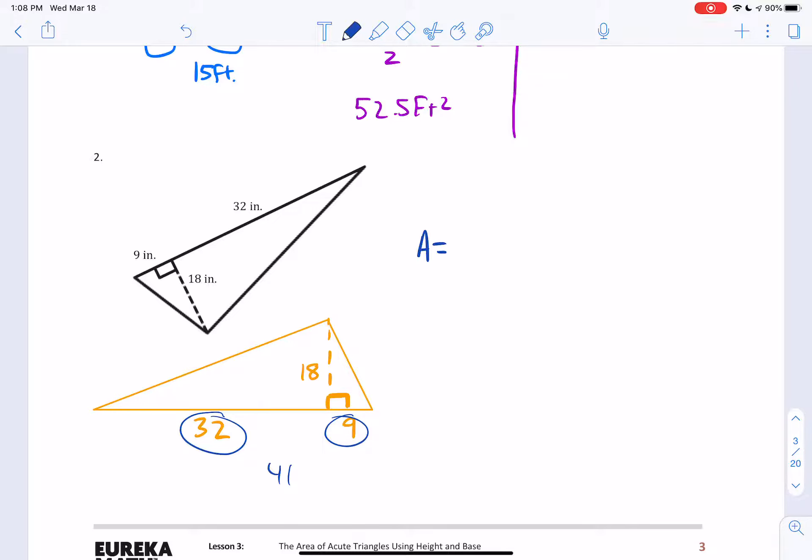Area equals base times height. My base is 30. Oh, it's not 32. The base is 41. I added them together. The height is 18. And then I'm going to divide by 2. Let me go ahead and go to my trusty calculator. 41 times 18 divided by 2. And the answer is 369 inches squared.